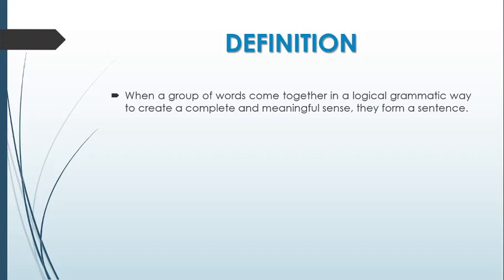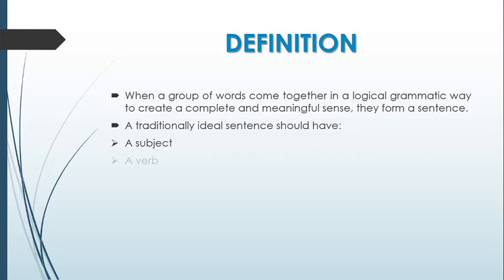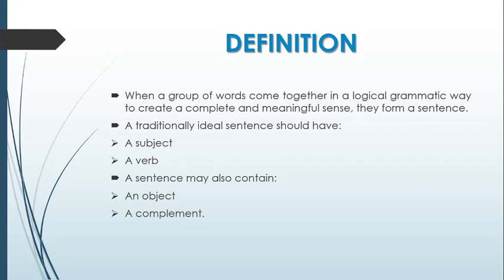What do the words mean when they are on their own? What do they represent? Which are the elements we use in a sentence? So a traditionally ideal sentence should have a subject and a verb. A sentence may also have further elements which include an object and a complement. Now where is the subject? Do I mean English, Maths, Biology, Chemistry, Physics?